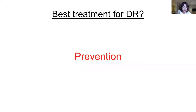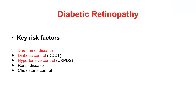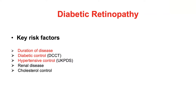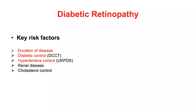The best treatment for diabetic retinopathy is preventing it in the first place. When you see these patients you can really influence what's going on by making them aware of the underlying cause. The key risk factors are duration of disease, glycaemic control, and hypertension control, but also of great importance are nephropathy and cholesterol control.